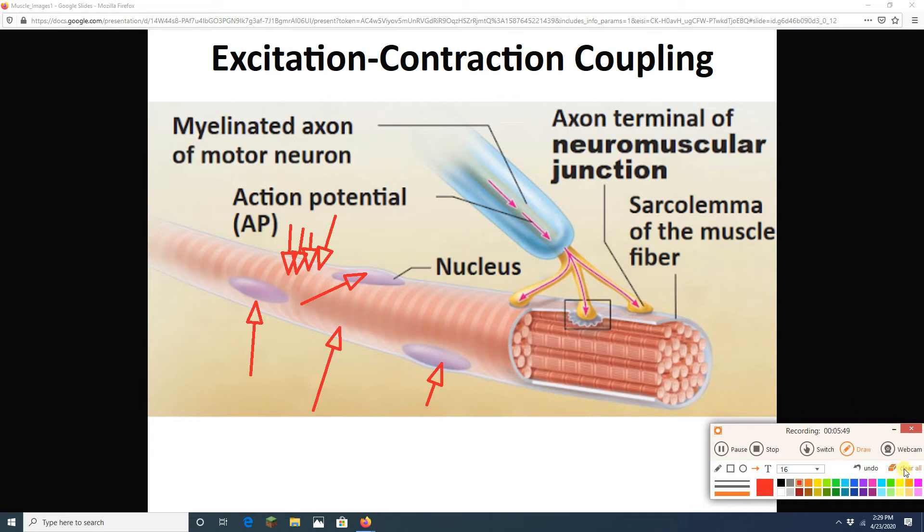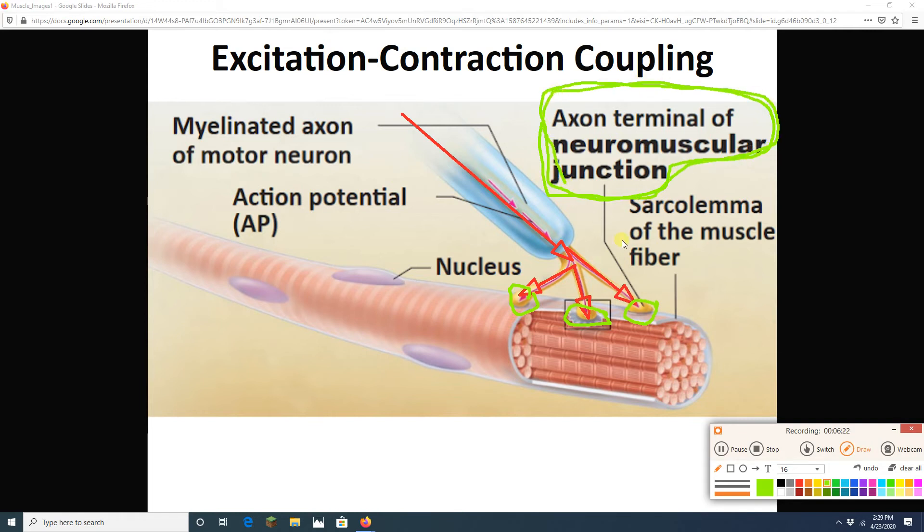An action potential is going to come down this axon, down these telodendria. It's going to release neurotransmitters at the synapse that we have here. At this beautiful synapse, we're going to release neurotransmitters. What are those neurotransmitters? What do they do, and how do they cause the muscle cell to contract? What actually happens at this neuromuscular junction? That's a word from lab that you should have heard already.